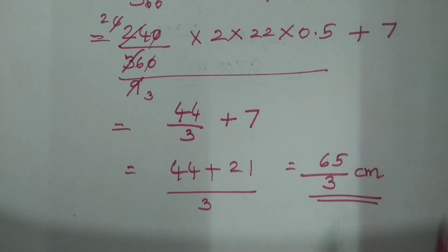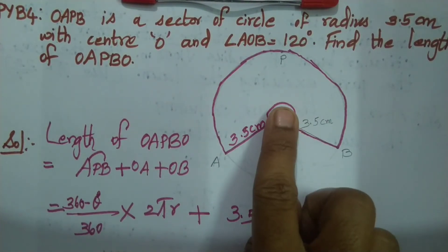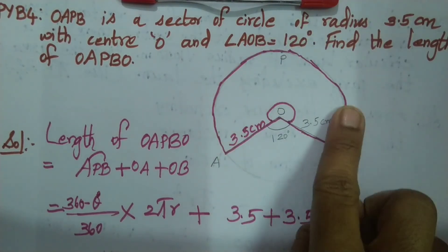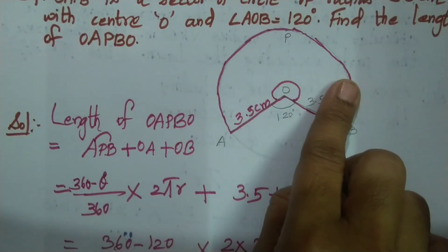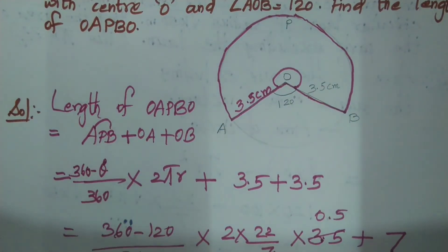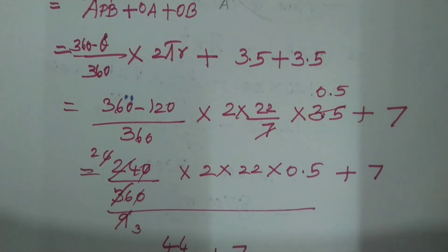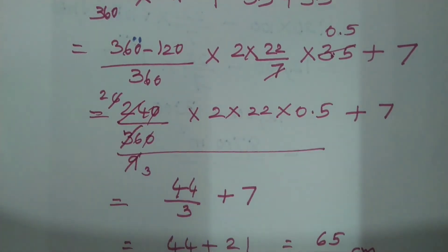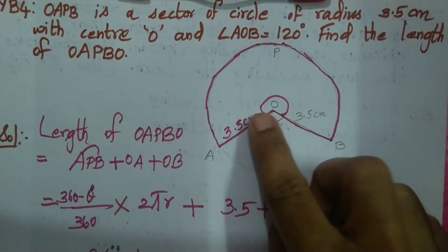So remaining multiply: 2 into 2 is 4, 4 into 22 into 0.5 which is equal to 44. So 44 by 3 plus 7. So again LCM. 3 is LCM. So 44 plus 7 into 3 is 21. So by 3, 65 by 3. 65 by 3 centimeter is the length of the arc. So in the end the arc length plus this one length radius. So 3.5, 3.5, 3.5. In the end the code length. Formula theta by 360, 2 pi. That's normal. Major: 360 angle 360. So 360, 120 minus, so 240 by 360, 2 pi r. That's 3.5, 3.5 plus 3.5 plus 3.7.